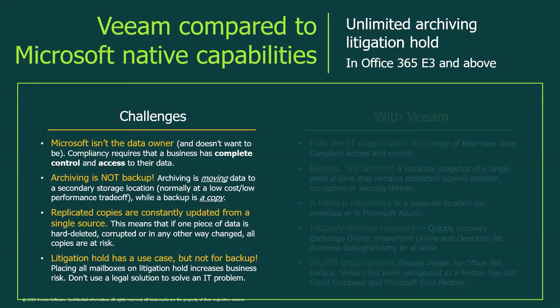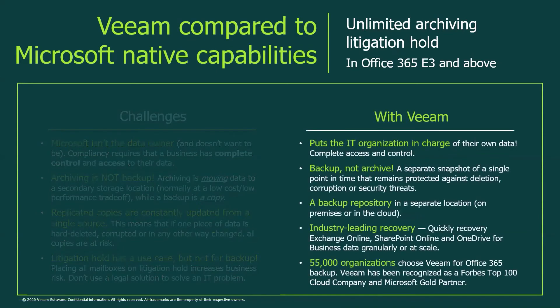A backup is fundamentally different from a replica — it is not directly updated every time a change occurs, giving you a snapshot at a single point in time. When your business data is threatened, the backup copy remains protected and can be used to restore lost data. Microsoft and Veeam share the belief that even though your data resides within Office 365, it is still your responsibility. Veeam Backup for Office 365 provides point-in-time recovery, granular recovery of Office 365 items in seconds, as well as e-discovery, with 25 different recovery options for email, SharePoint, and OneDrive from a single backup.